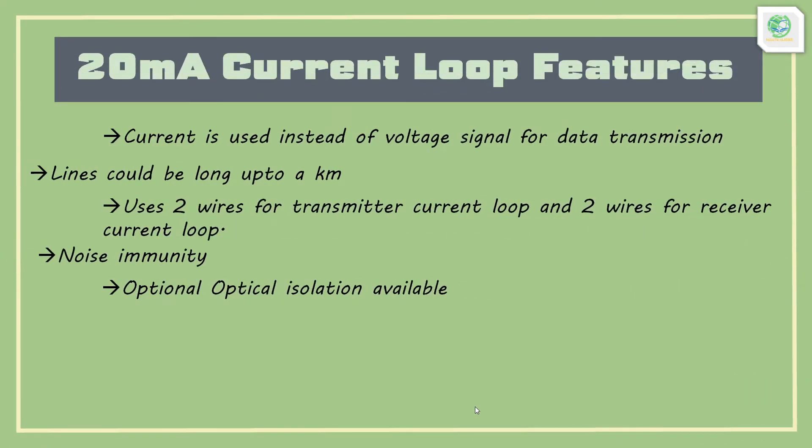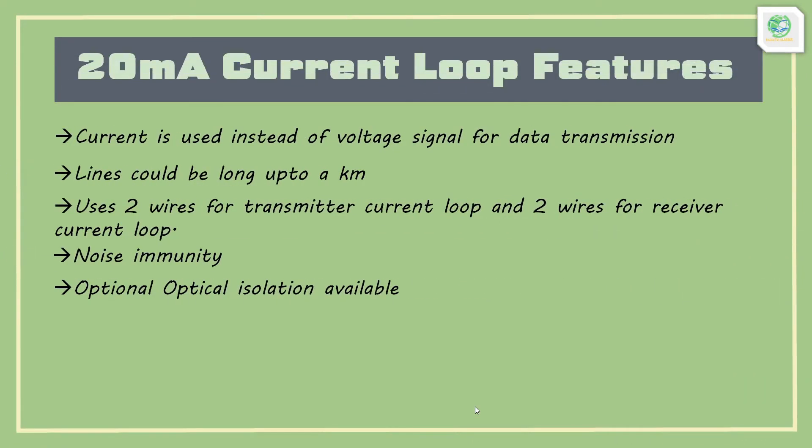When we talk about features of 20mA current loop, current is used instead of voltage signal for data transmission. Lines can be long, up to a kilometer.